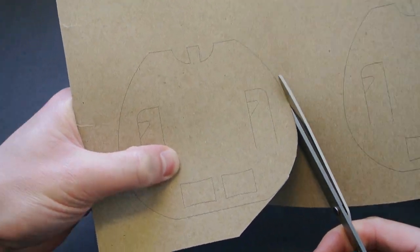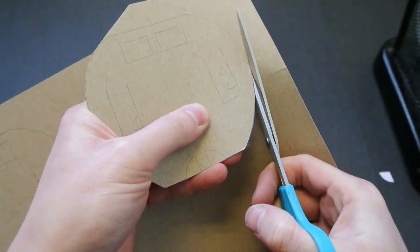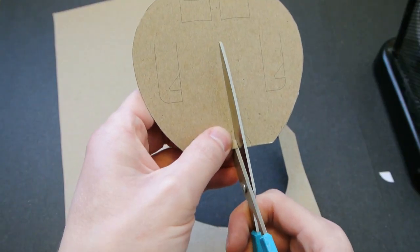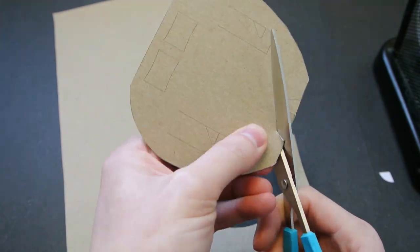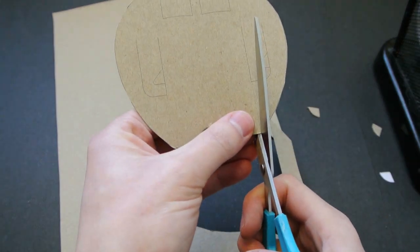Once you get the design on your cardboard, you just need to cut it out with scissors. Try to stay as close to the lines as possible.